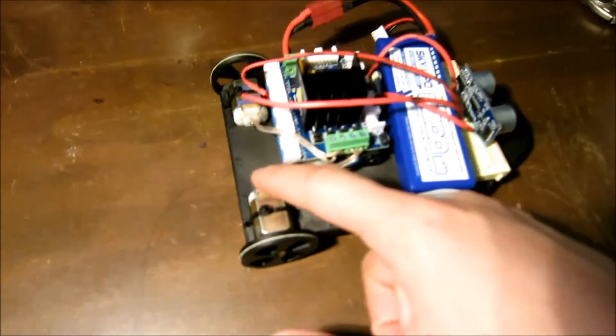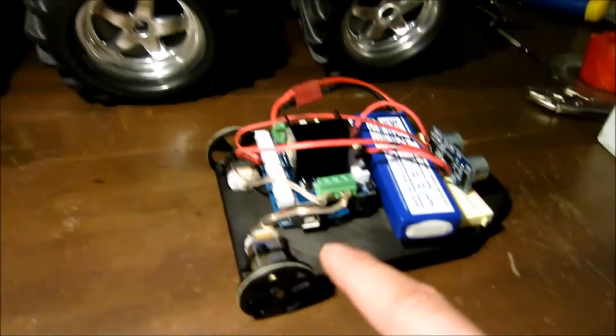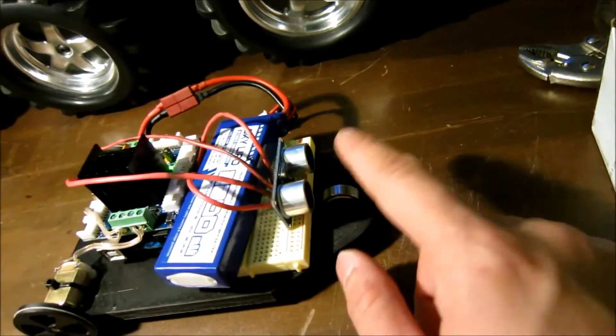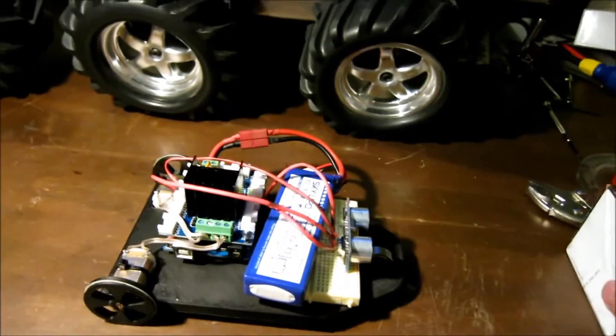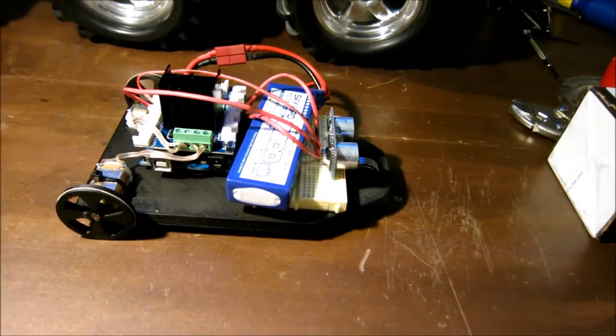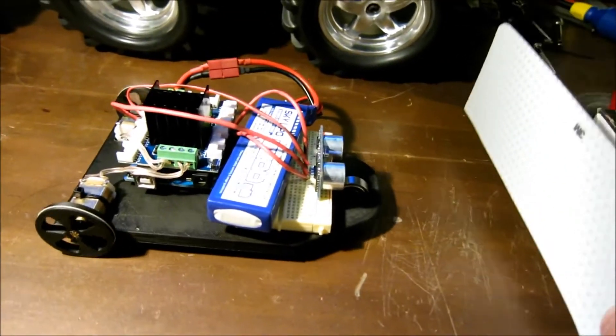We have two motors being controlled by the motor driver and two drive wheels and one free-rolling in the front. So basically what this does is, we set it to maintain a distance of 6 inches away from the surface in front of it.